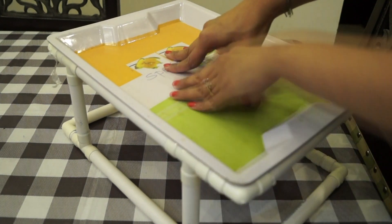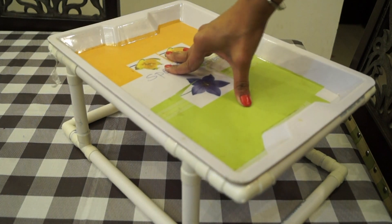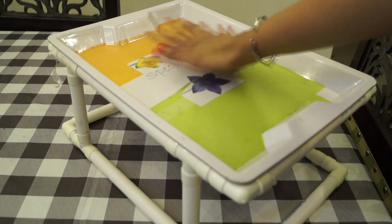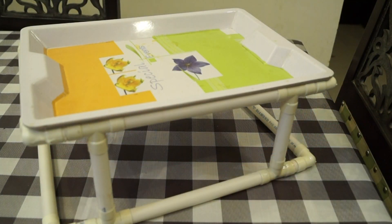So basically we have to cut these PVC pipes according to the measurement of a serving tray or whatever you are keeping on the top of the locker stand.